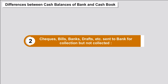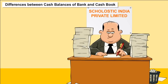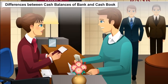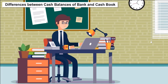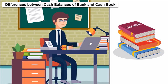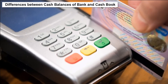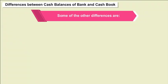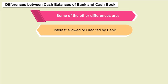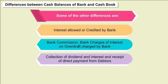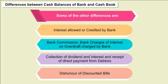Another cause: checks, bills, and bank drafts sent to bank for collection but not yet collected. The trader receives checks, bills, and bank drafts from third parties and deposits them into the bank for collection, immediately recording them on the debit side of the cash book. However, the bank only credits the customer's account when it actually realizes the amount. Other differences include: interest allowed or credited by the bank, bank commission, bank charges, interest on overdraft charged by the bank, collection of dividend and interest, receipt of direct payments from debtors, and dishonor of discounted bills.